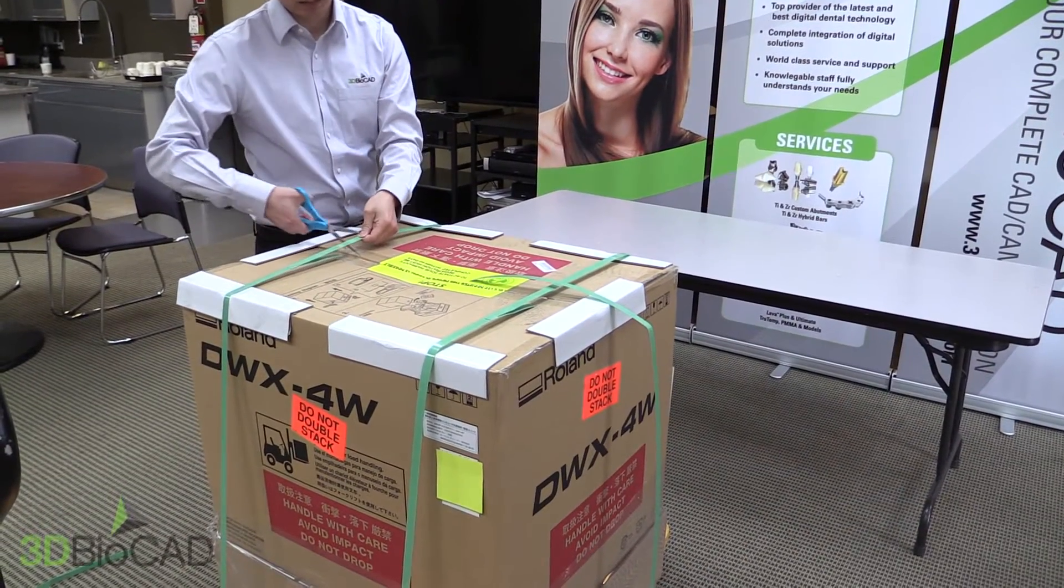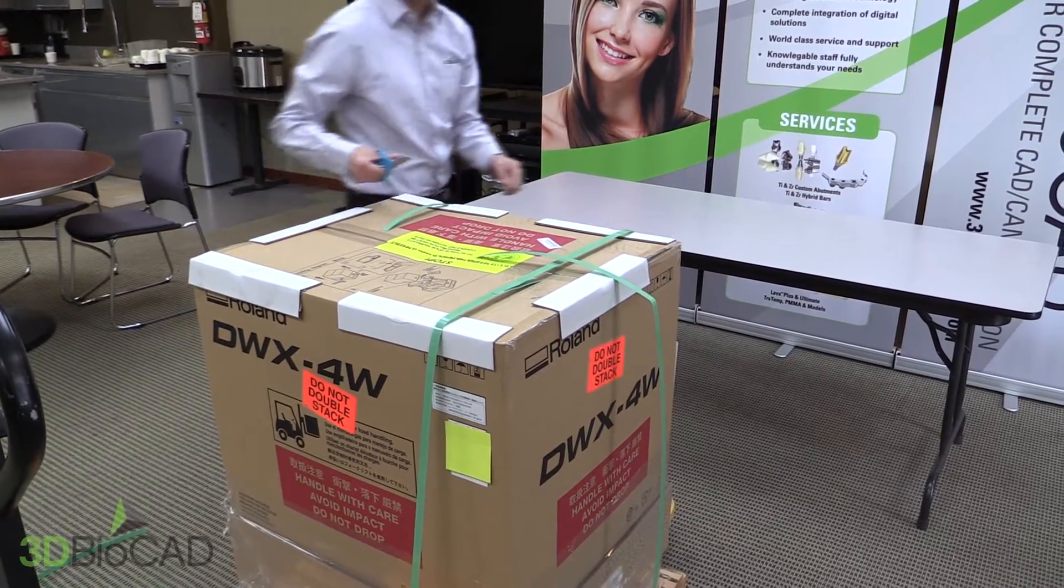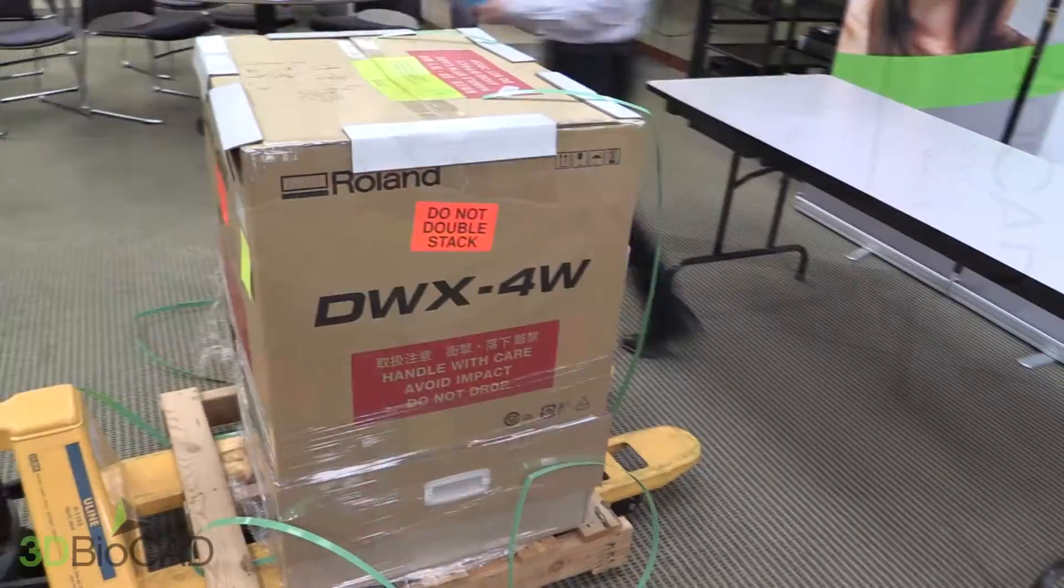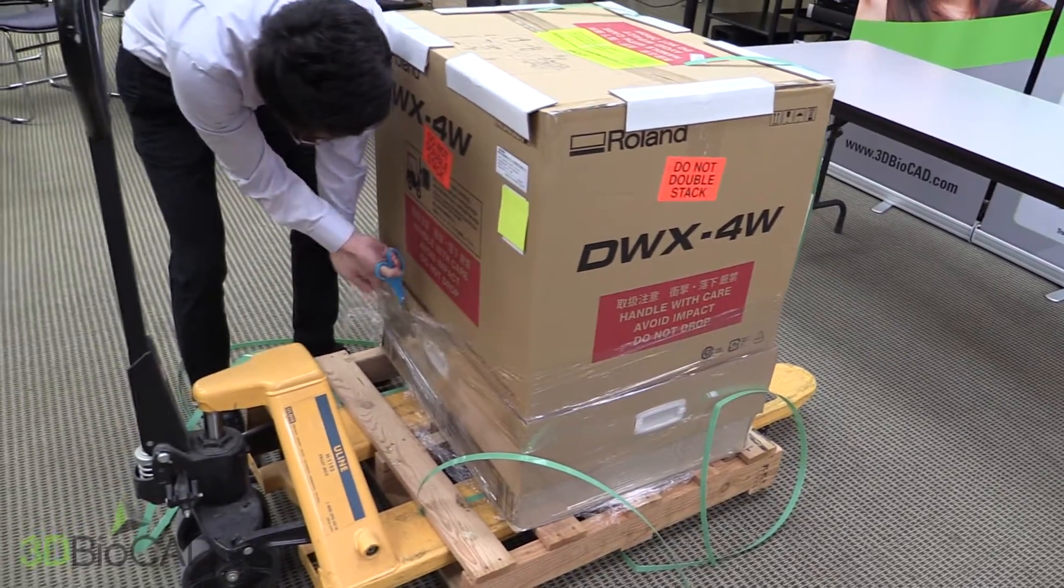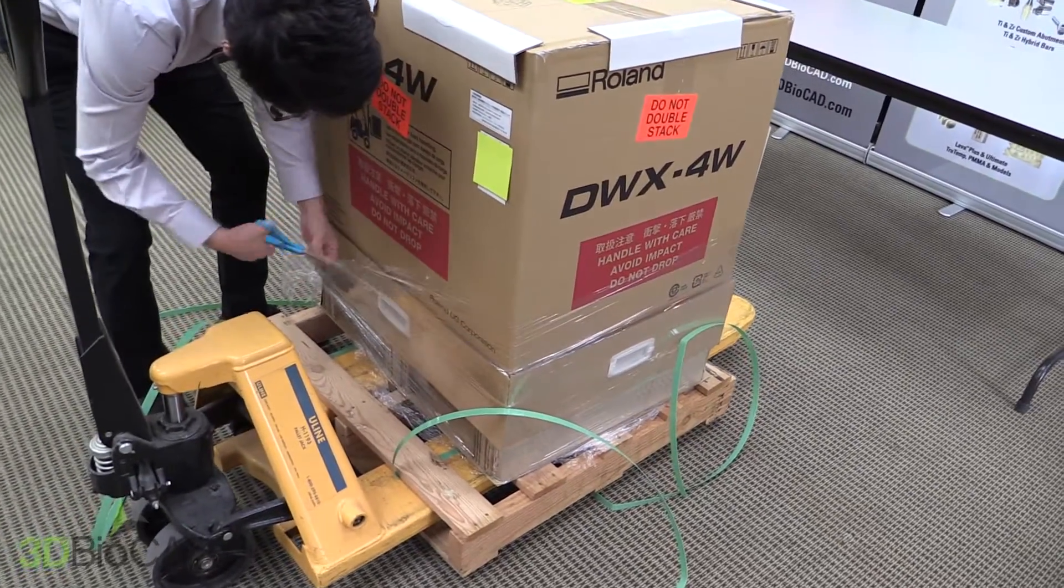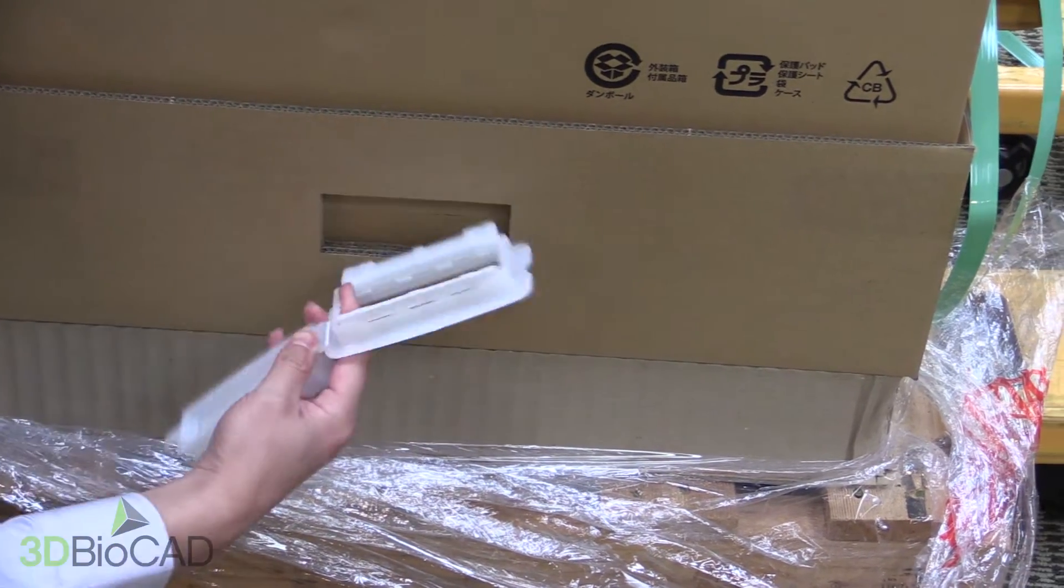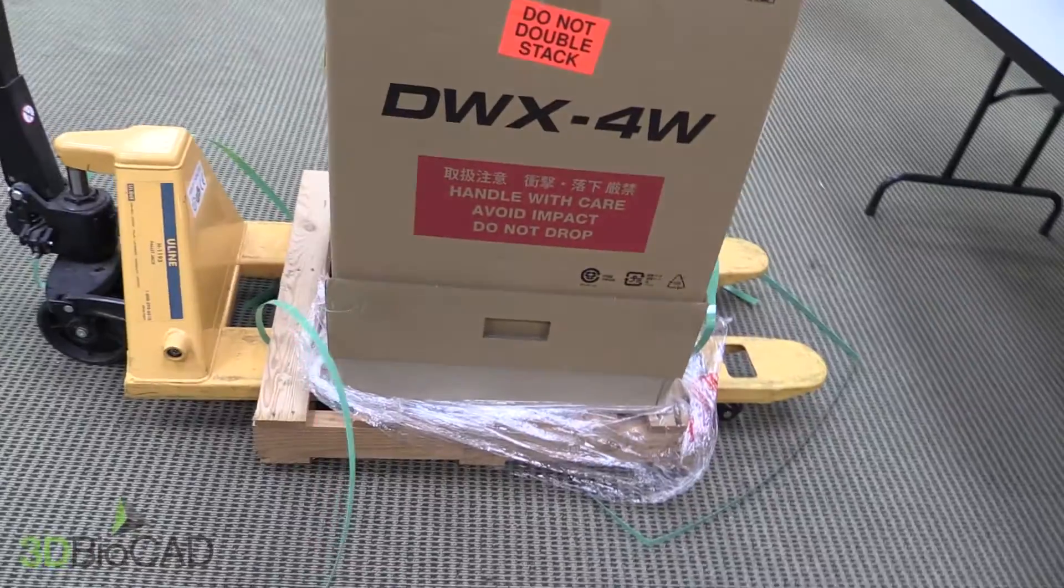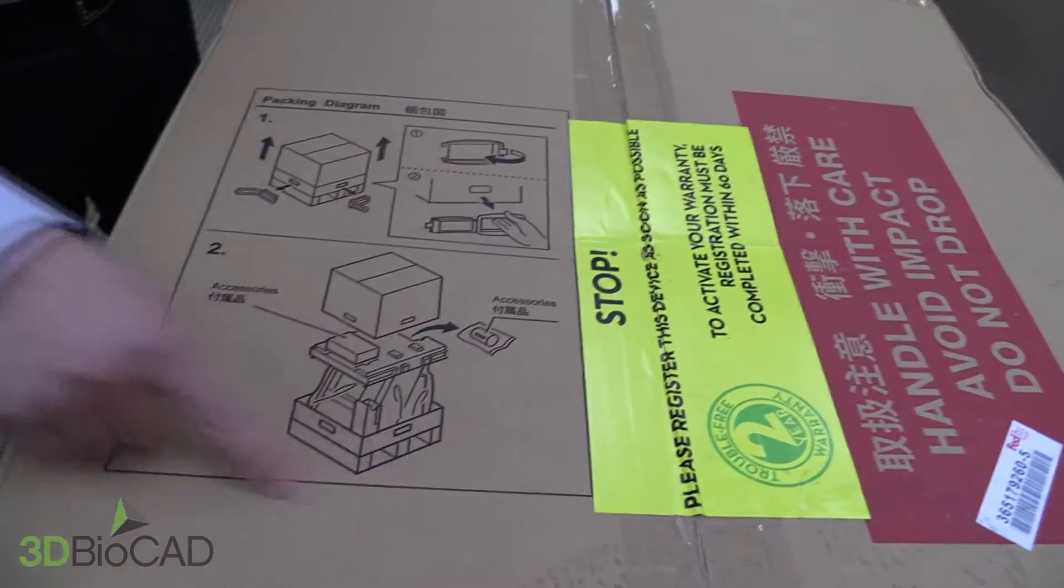When you receive your unit, you need to open the protective box by first cutting the plastic strap and plastic wrap securing the box to the pallet. Once this is done, you need to remove the plastic handles on all four sides by pulling on the right tab, removing the entire plastic handle as shown in the instructions on top of the box.